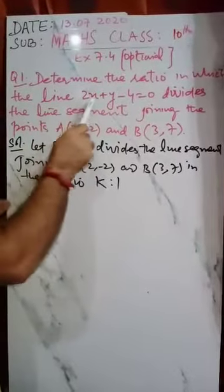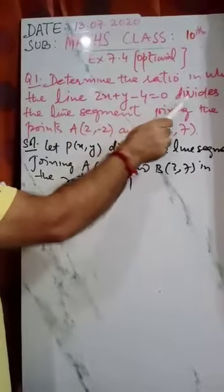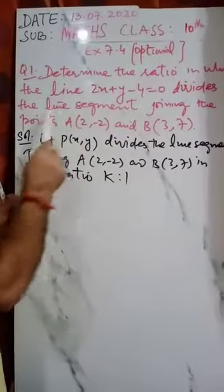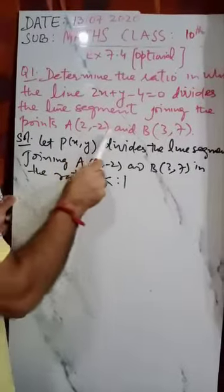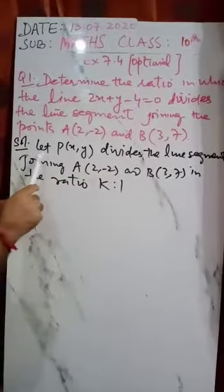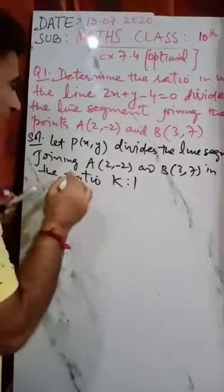In which the line 2x + y - 4 = 0 divides the line segment joining the points A(2, -2) and B(3, 7). So let the required ratio be k is to 1.